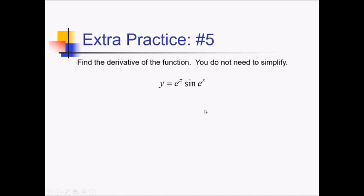For this problem, I want the derivative of e to the pi times sine of e to the x. At first glance this looks like a product rule, but e to the pi is actually just a constant. So it's really just going to be a chain rule involving sine of e to the x, with e to the pi along for the ride as a coefficient. Derivative of sine of something is cosine of the something, so we have e to the pi cosine of e to the x, times the derivative of the inner function, which is also e to the x. And this one's done.